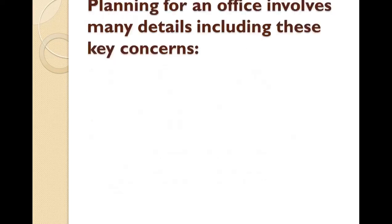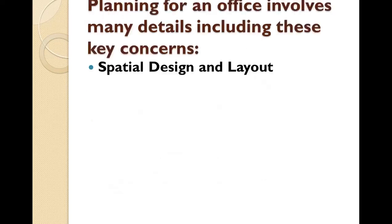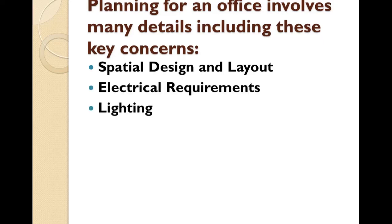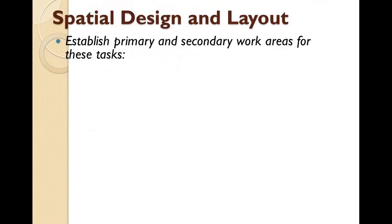Planning for an office involves many details including these key concerns: number one, spatial design and layout; number two, electrical requirements; number three, lighting; and then ergonomics. Let's first move to spatial design and layout. How you use your space is critical in determining how to structure the layout of your office.